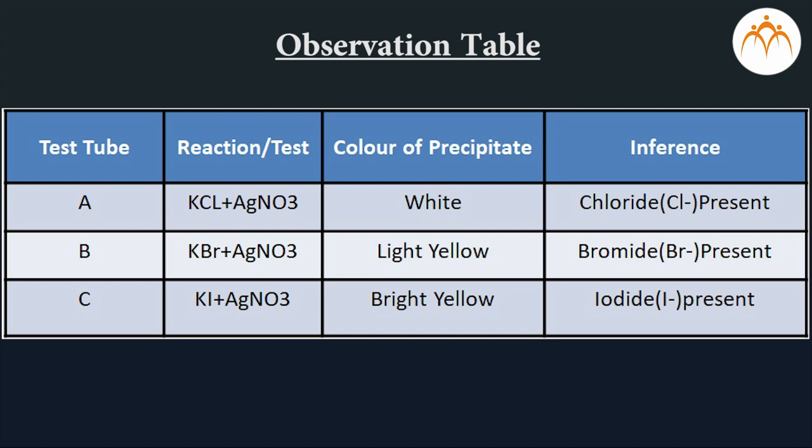All these elements are from one group. Why? Because when they react with silver nitrate, they form precipitate. Though they are of different colors, precipitation is an indicator of 17th group elements.